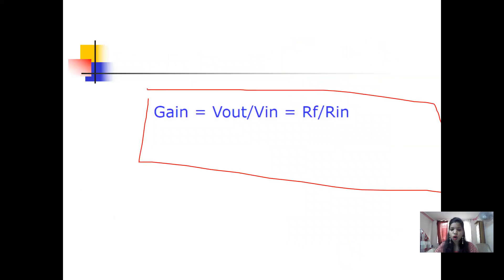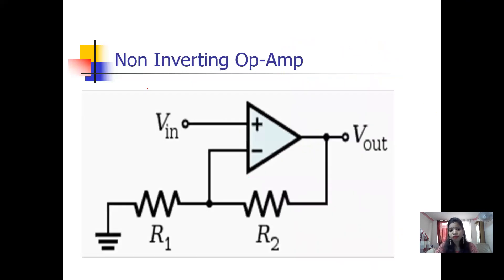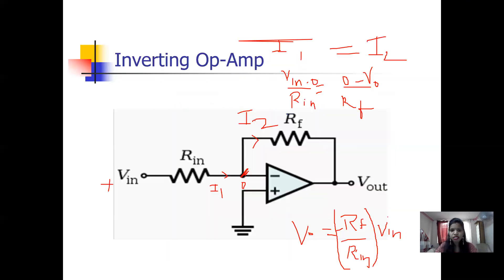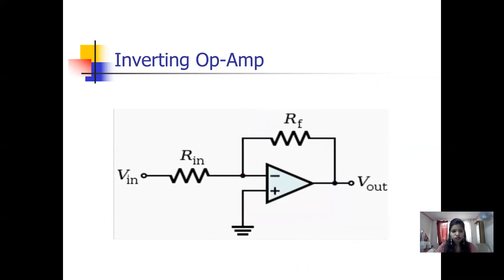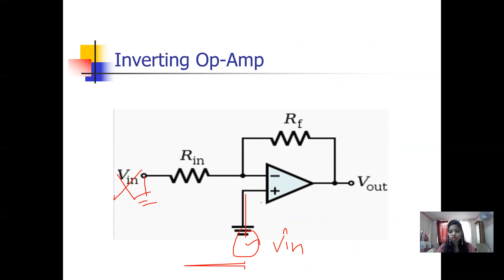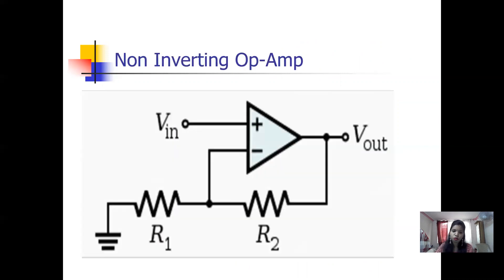The gain of the inverting op-amp is negative R_f over R_in. For the non-inverting op-amp, the same circuit is used but the negative terminal is grounded and the input is connected to the positive terminal. You can modify the inverting circuit by grounding the inverting input and connecting V_in to the positive terminal to make it a non-inverting op-amp.